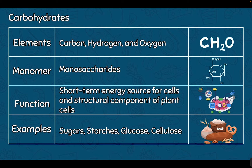The main function of carbohydrates is as a short-term energy source for cells. We use carbohydrates and break them down through cellular respiration to make ATP. There's also a carbohydrate called cellulose that makes up the cell wall of plant cells, so it can also have a structural benefit. We find carbohydrates in sugars, starches like breads, rice, and potatoes — those are very long chains of many monosaccharides. Glucose is the one our cells use to make ATP, and cellulose is found in plant cells.